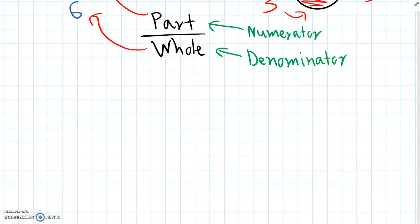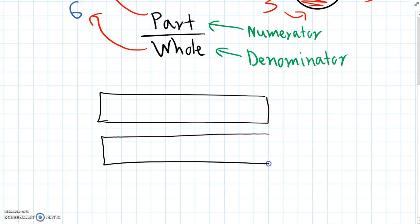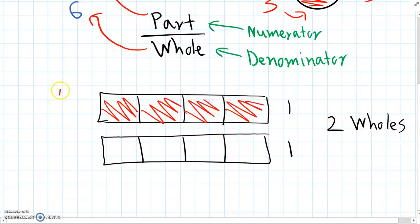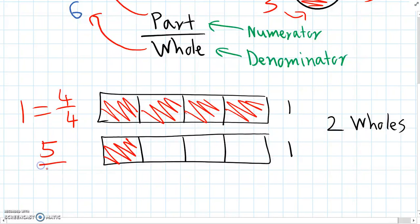So we can also use fractions to show more than one whole. Here we have two whole rectangles, and again we'll divide them into four, or into quarters each. So we have one whole and another whole — two wholes in total. If we shade in all four quarters of the first one, that equals one whole. But if we also shade in another one quarter, the total number of quarters shaded in is five quarters. So we write this as five over four — five quarters.